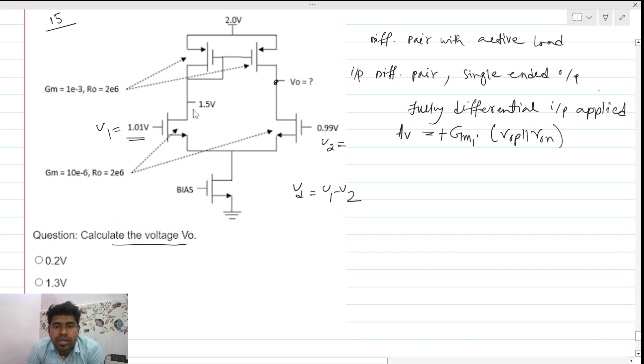So we know that if we solve this, v out over v in, which is v1 minus v2, equals gm1 times ro p parallel r on. This is a simple, very common circuit as well.